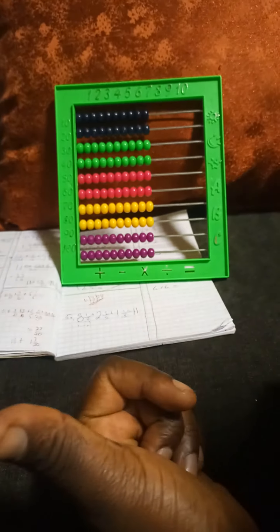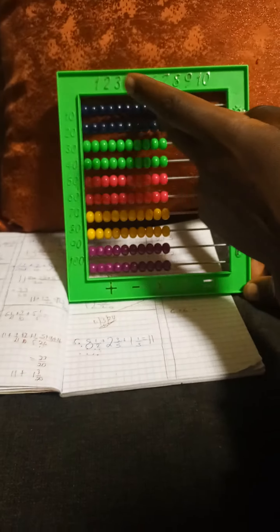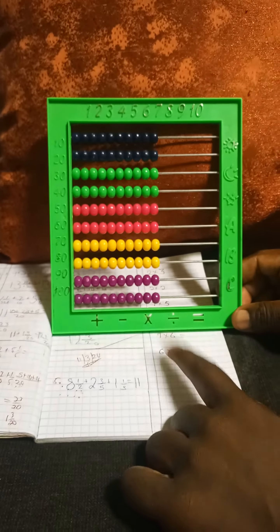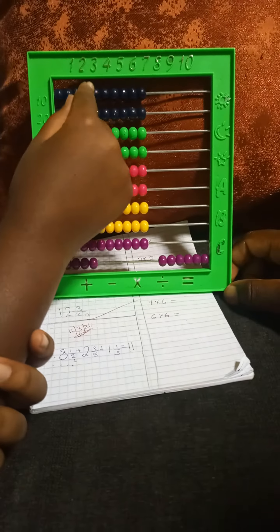We're going to do 6 multiplied by 6 using an abacus. We have 6 that we want to multiply by 6. We are going to use the lower row as singles and also the upper row as ones for the singles. So let's have 6 multiplied by 6. Bring 6 up — that one is 6, and the upper house also 6.